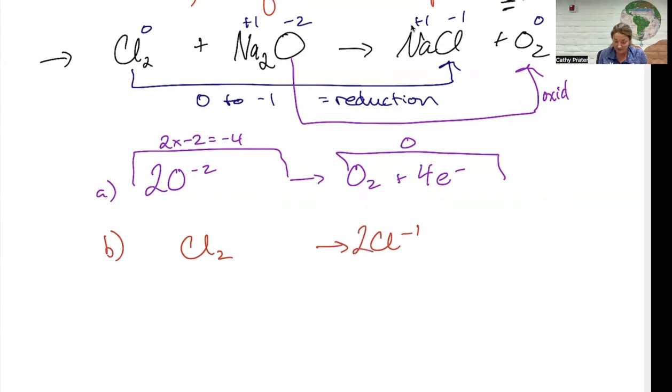And now I need to balance my total charges. The total charge on this side before adding electrons is zero. The total charge on this side is negative two. So I need to add electrons to this side. How many of them? Two. That's my reduction half reaction.